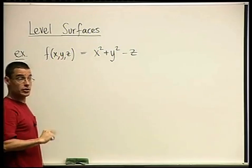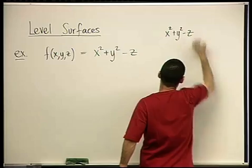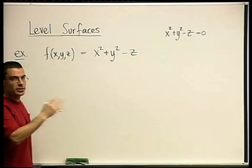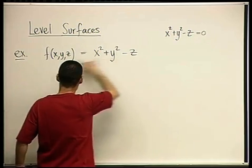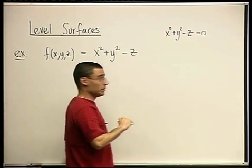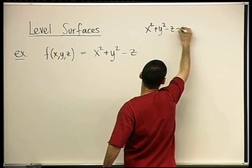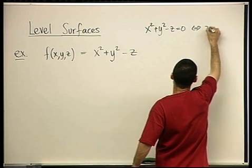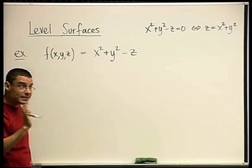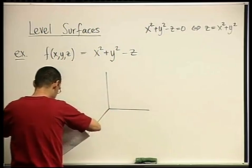What I can draw is the level surfaces, just like we did before for level curves. So for example, when is x squared plus y squared minus z equal to zero? To the constant zero. What are all the points x, y, z where f equals zero? Very good. A circular paraboloid.